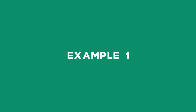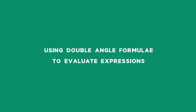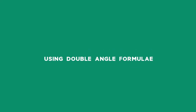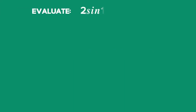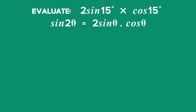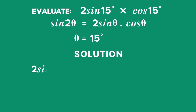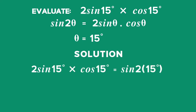Example 1: Using double angle formulae to evaluate expressions. Evaluate 2 sin 15 degrees times cos 15 degrees. Using the double angle expansion for sin 2θ with θ equal to 15 degrees, we see that 2 sin 15° times cos 15° is equal to sin(2 times 15 degrees), which is sin 30 degrees, and from special angles sin 30 degrees is equal to a half.